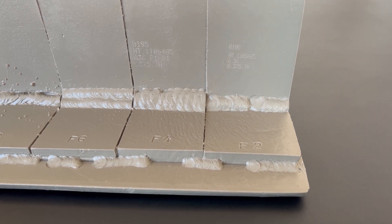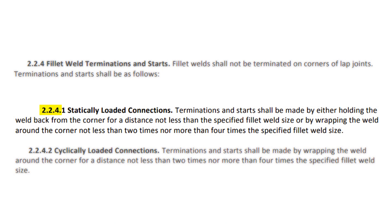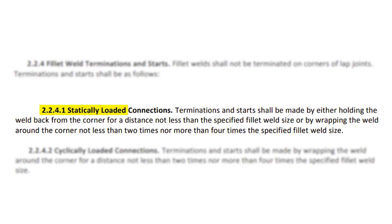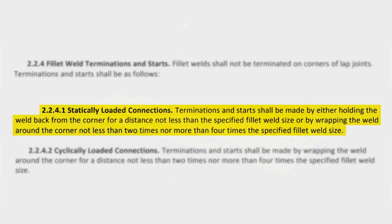There's a criteria that you guys have to follow mentioned in the next two statements. 2.2.4.1 statically loaded connections: terminations and starts shall be made by either holding the weld back from the corner for a distance not less than the specified fillet weld size, or by wrapping the weld around the corner not less than two times nor more than four times the specified fillet weld size.